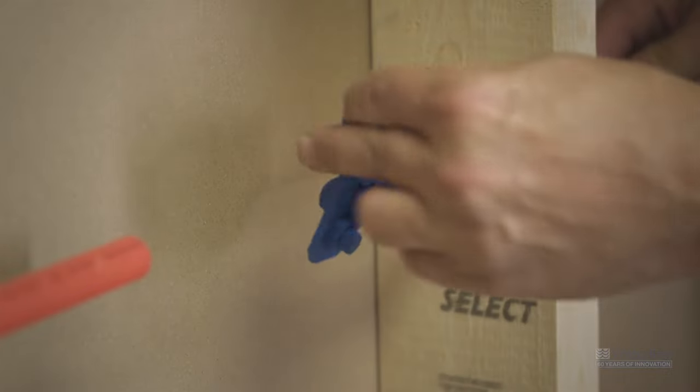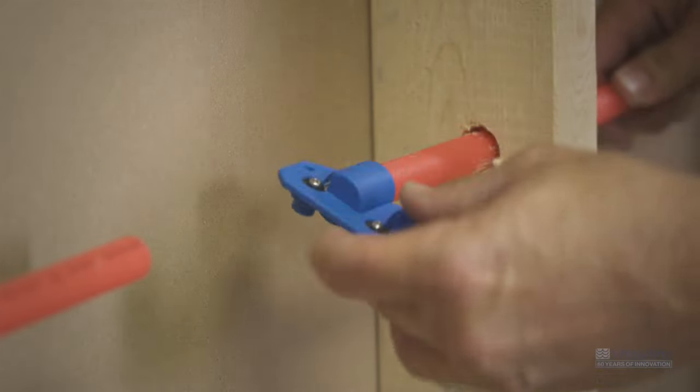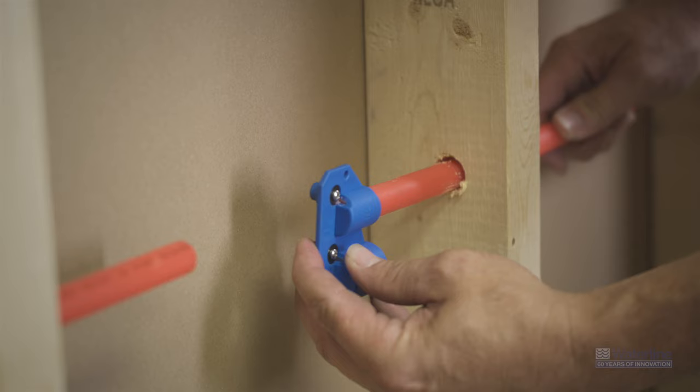When the pipe is free of any burrs or sharp edges, mark the insertion depth on your pipe using the same push and connect depth and deburring tool.